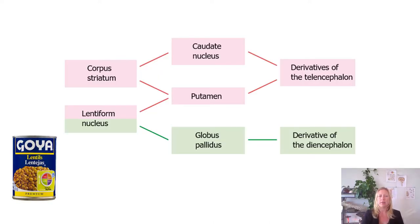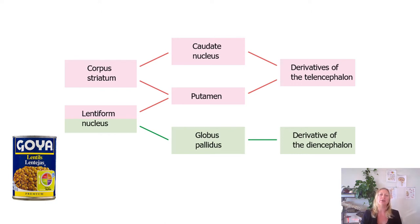This chart keeps things straight and covers very common board exam questions. The corpus striatum — or just the striatum — is the caudate nucleus and the putamen, a derivative of the telencephalon. The lentiform nucleus (shown in pink and green) is the putamen plus the globus pallidus: putamen is telencephalon, globus pallidus is diencephalon. Together they're called the lentiform nucleus — somebody thought they looked like lentils.